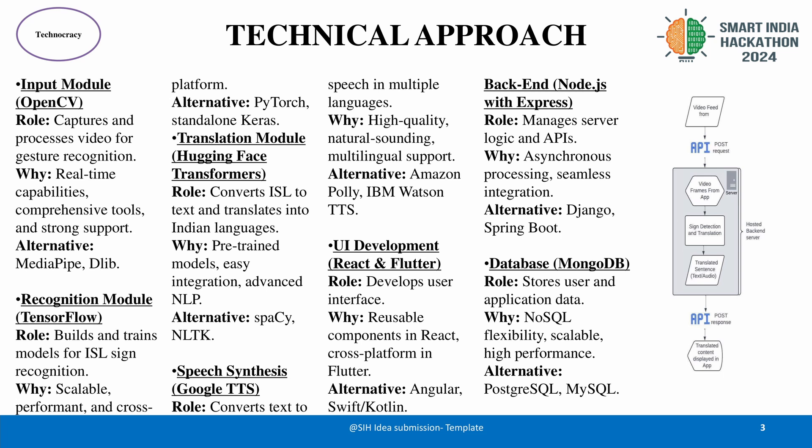Node.js with Express manages server logic and APIs, providing asynchronous processing and seamless integration with other components. Alternatives like Django and Spring Boot were evaluated, but Node.js was chosen for its efficiency and performance. MongoDB is used for storing user and application data due to its NoSQL flexibility, scalability, and high performance. Other options like PostgreSQL and MySQL were considered, but MongoDB aligns well with our data storage needs.